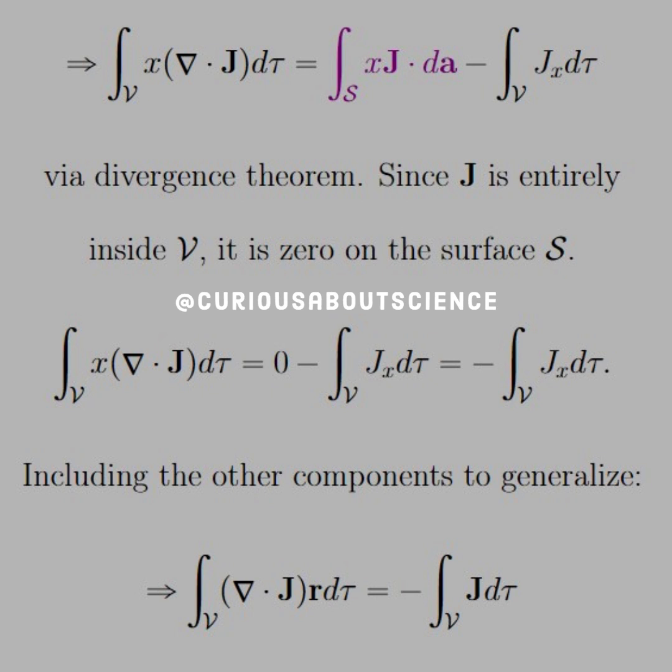So this form here shows us that x times the divergence of J is equal to the integral of the component of J itself. That's useful, and we can generalize this to the divergence of J times the r vector is equal to the negative volume integral of J itself.